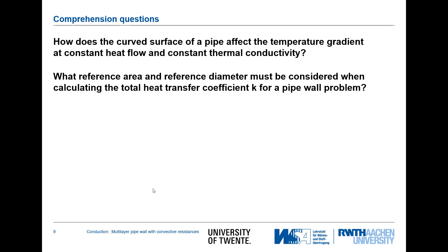I would like to ask two comprehension questions. First: how does the curved surface of the pipe affect the temperature gradient at a constant heat flow and constant thermal conductivity? In cylindrical coordinates, the area changes with the radius. For a constant heat flow, Fourier's law shows that an increasing area causes a decreasing temperature gradient.